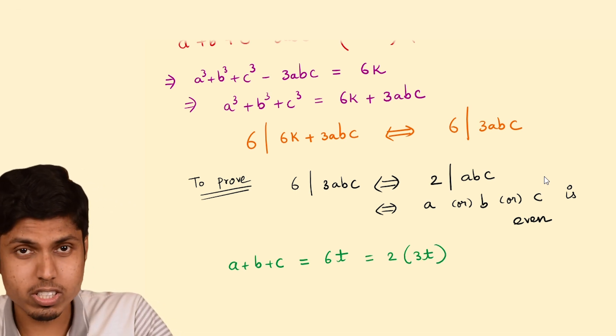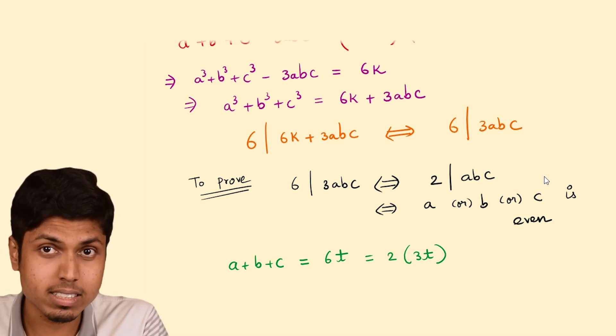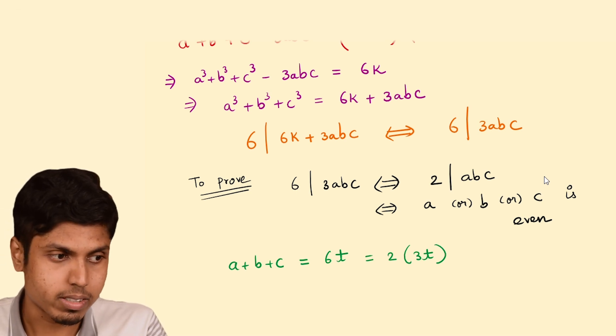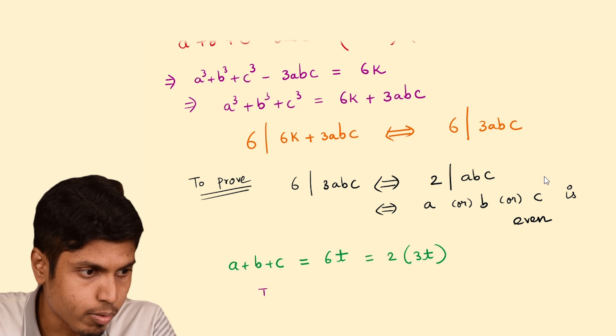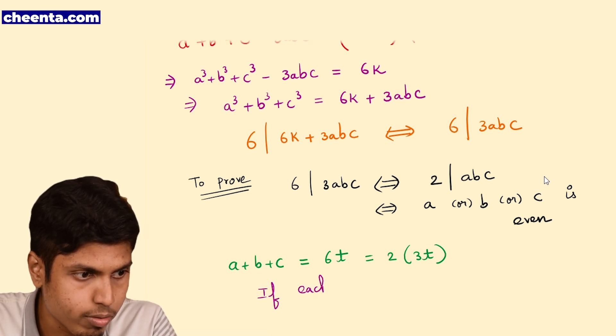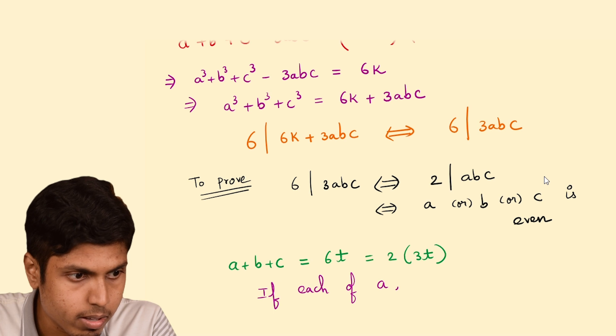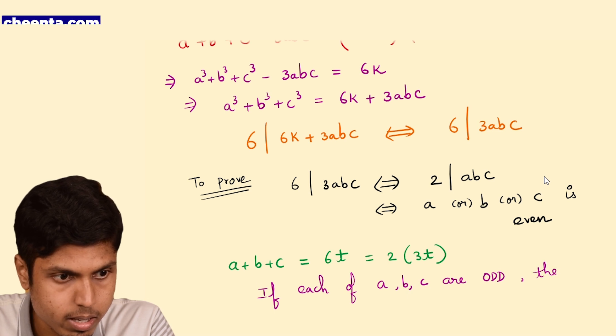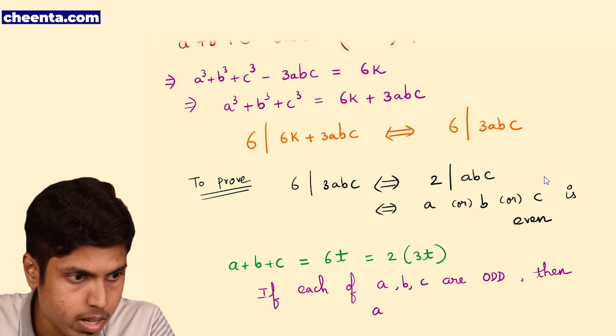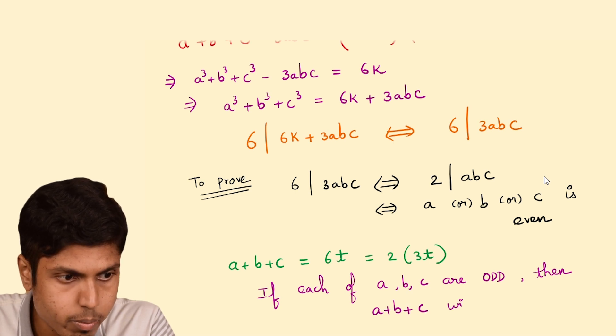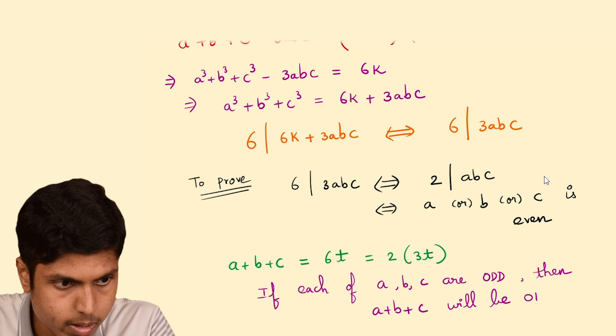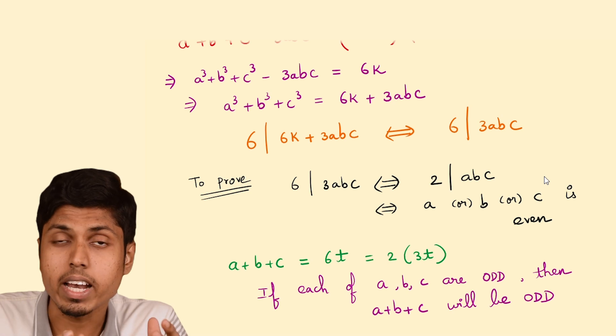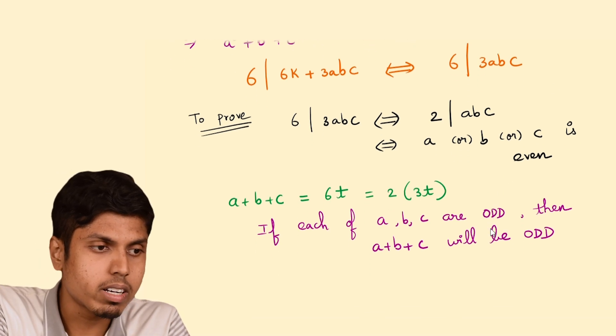And for the sake of contradiction, let's assume that all 3 A, B and C are odd. If you consider that assumption, you will get that if each of A, B, C are odd, then A plus B plus C will be odd. But that's a clear-cut contradiction. We know that A plus B plus C is twice of 3t which is an even number.